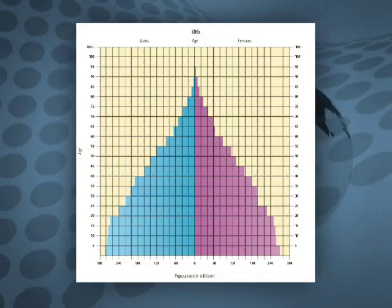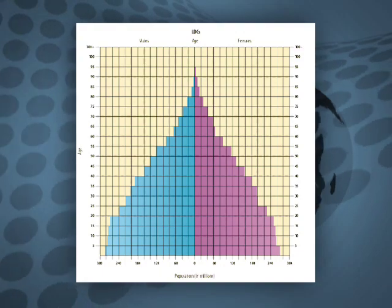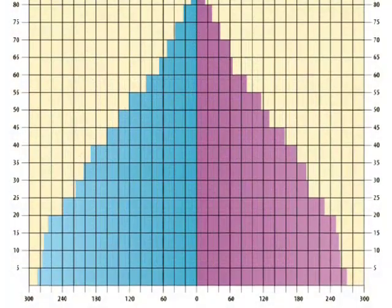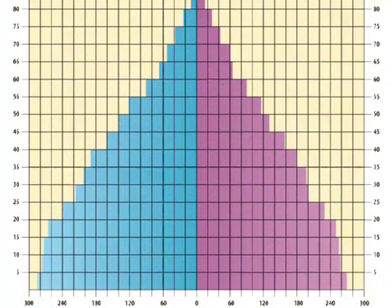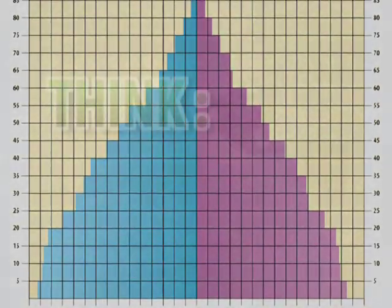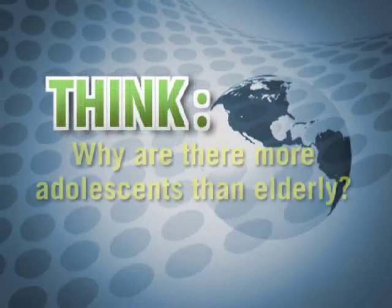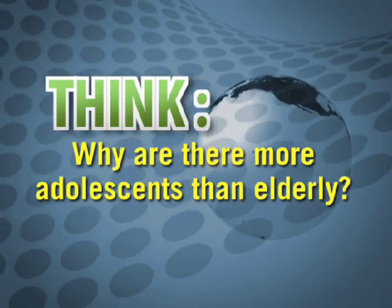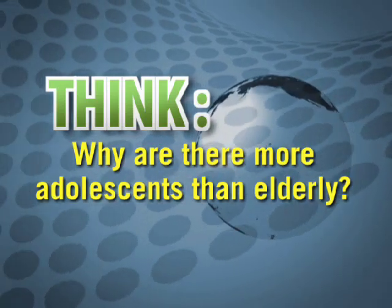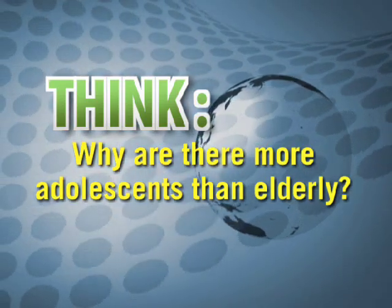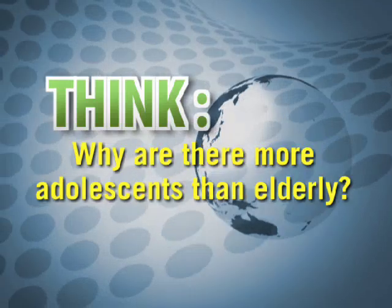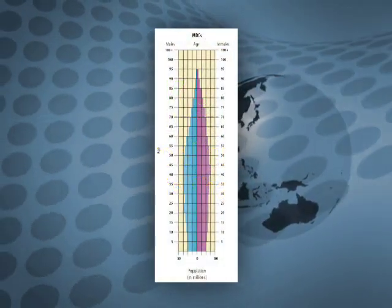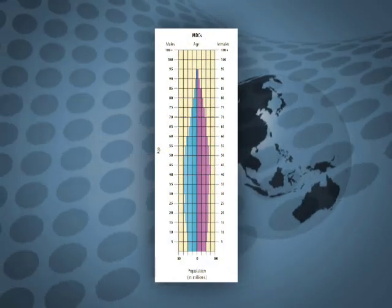First, let's examine the diagram for the lesser developed countries. Notice there are far more people in their adolescent years than in their elderly years. Why do you think this might be the case? Think about the factors that lead to birth and death rates within the less developed countries. Now examine the diagram for the more developed countries and ask the same questions.